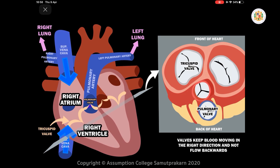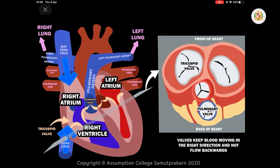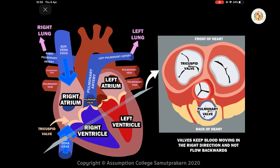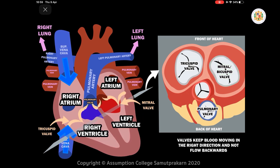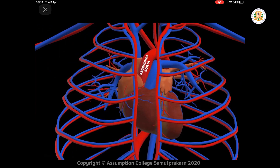When the deoxygenated blood flows to the lungs, the blood exchanges gases. After that, oxygenated blood returns to the heart, passing through the pulmonary veins and through the valve named the mitral valve, also called the bicuspid valve.